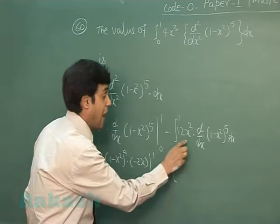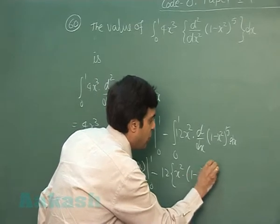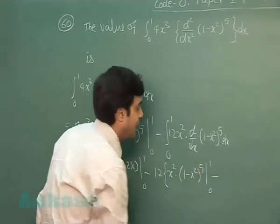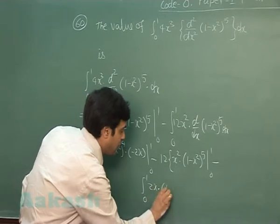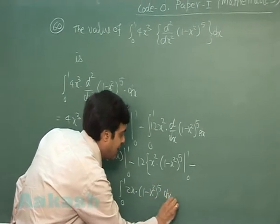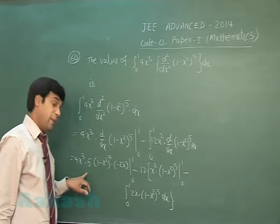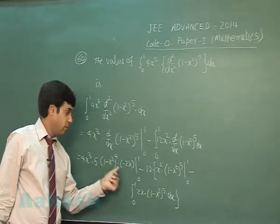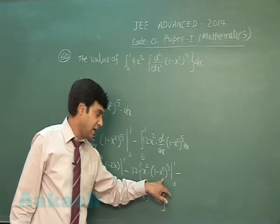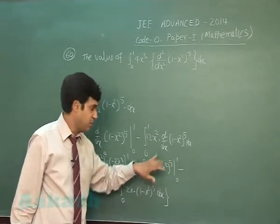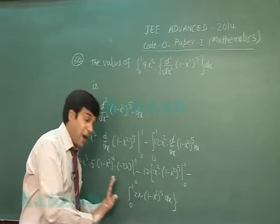Again applying integration by parts: 12 times [x²·(1-x²)⁵ from 0 to 1] minus the integral from 0 to 1 of 2x·(1-x²)⁵ dx. When we apply the limits, putting 1 gives 0 and putting 0 also gives 0 for both boundary terms, so those terms vanish. We are left with simply the remaining integral.